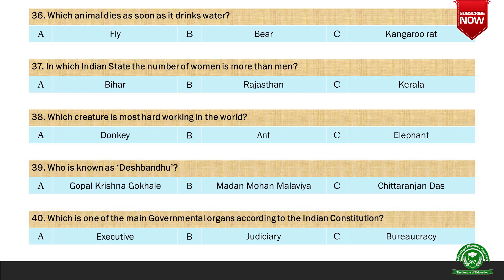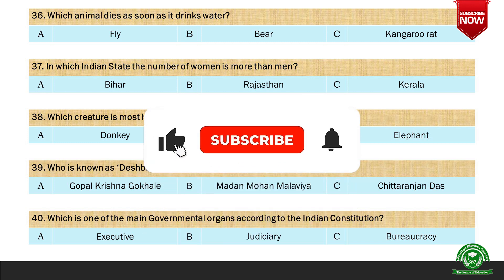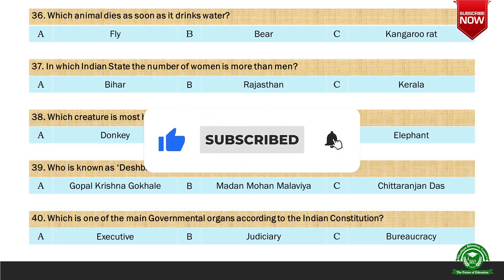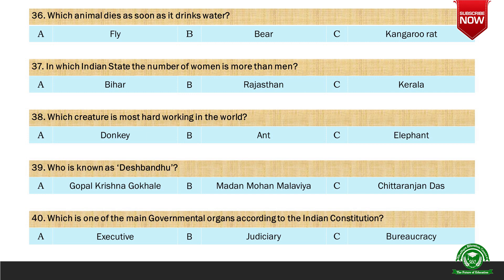Next question: Who is known as Deshbandhu? Options are A. Gopal Krishna Gokhale, B. Madan Mohan Malaviya, and C. Chittaranjan Das. Very easy question — you all know that. And the right option is C. Chittaranjan Das.